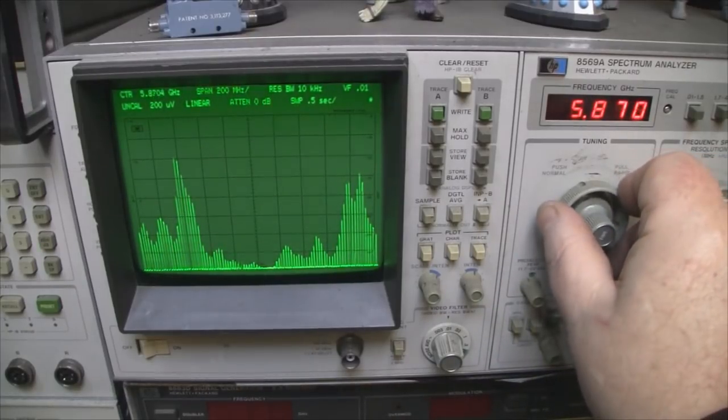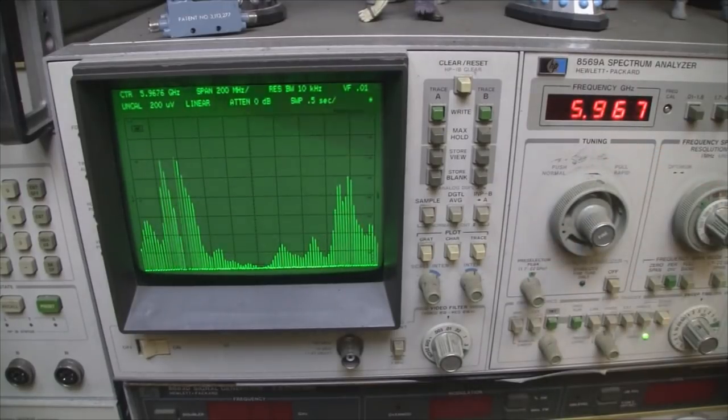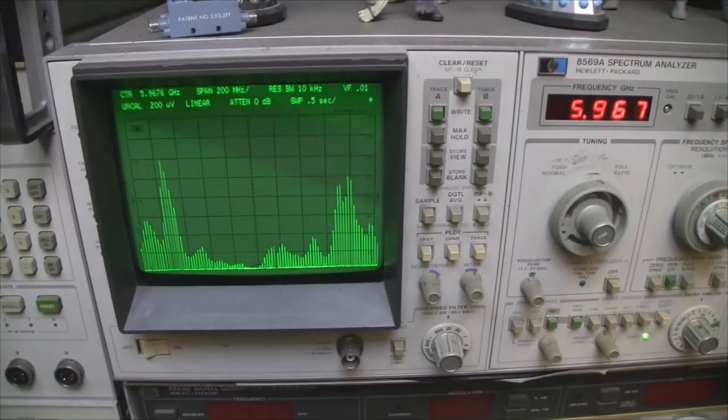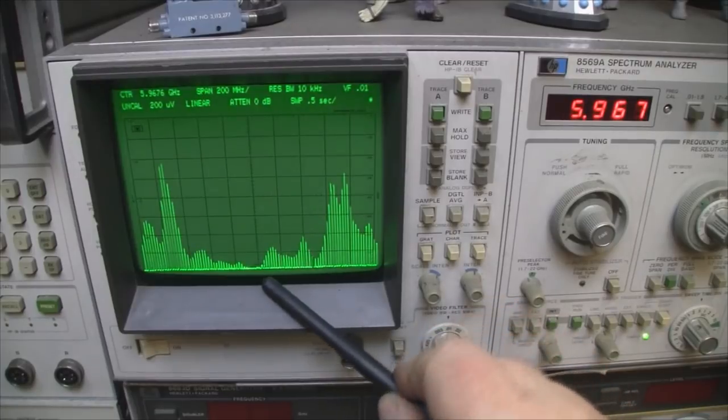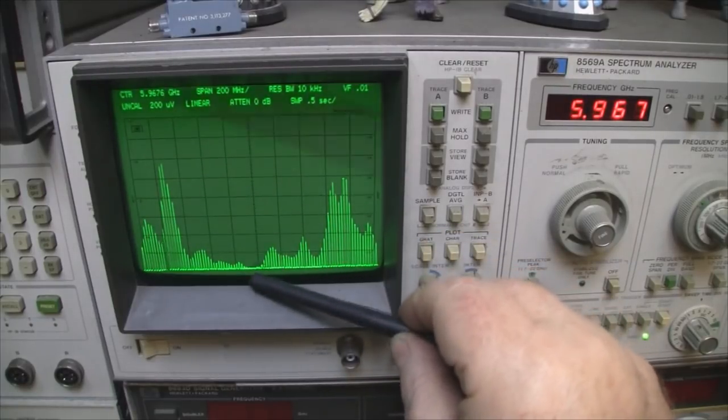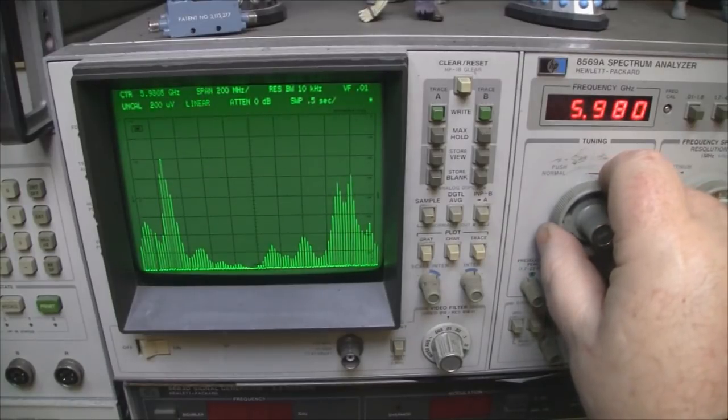So let me just move the spectrum analyzer along a little bit to get an idea of its operating frequency. I've got that set at 5.967 GHz, so it would still work really well up to that kind of frequency. Really nice little antenna.